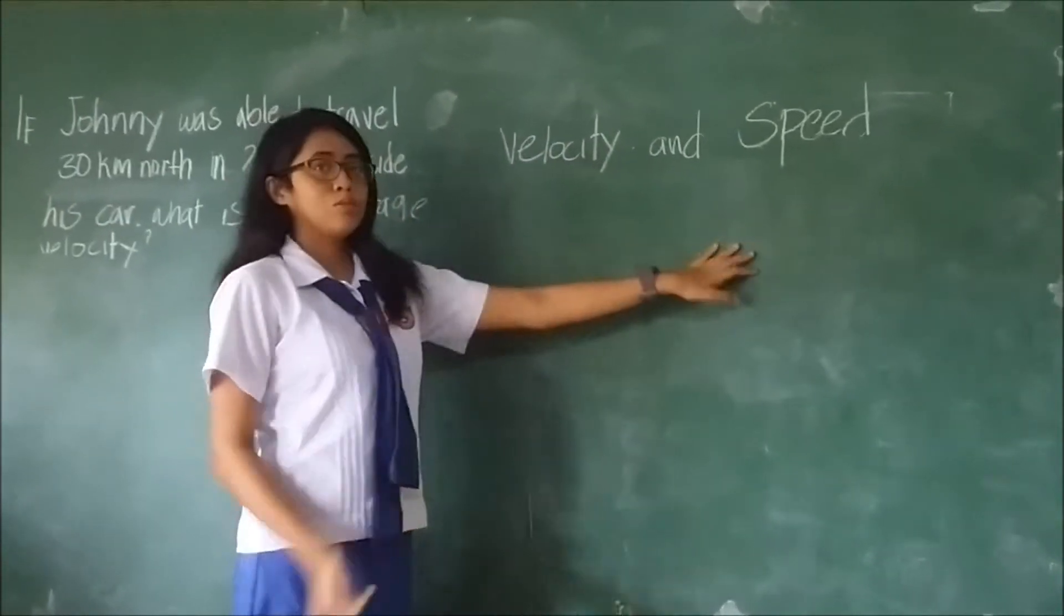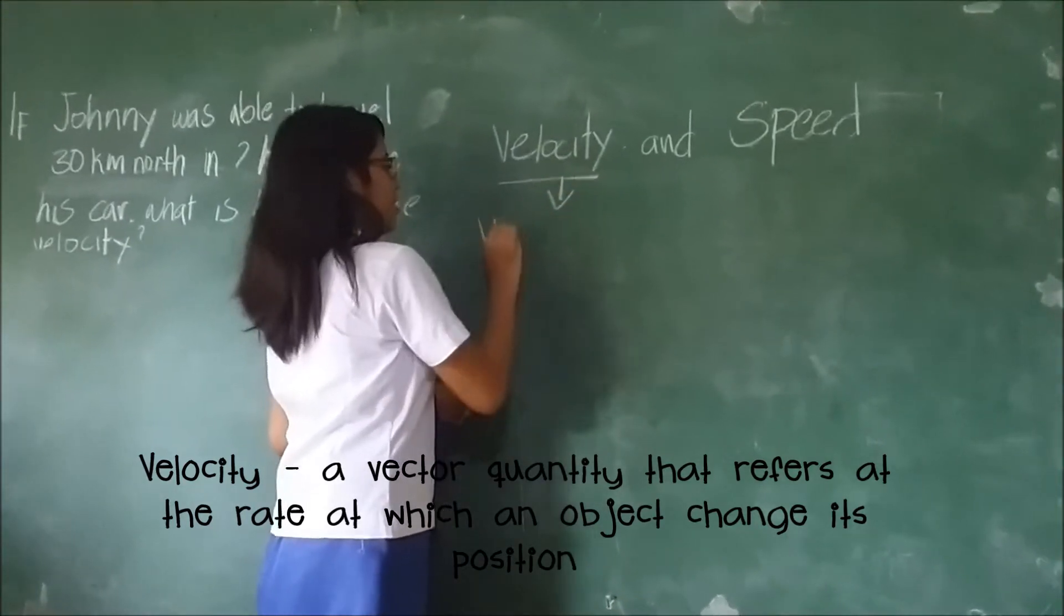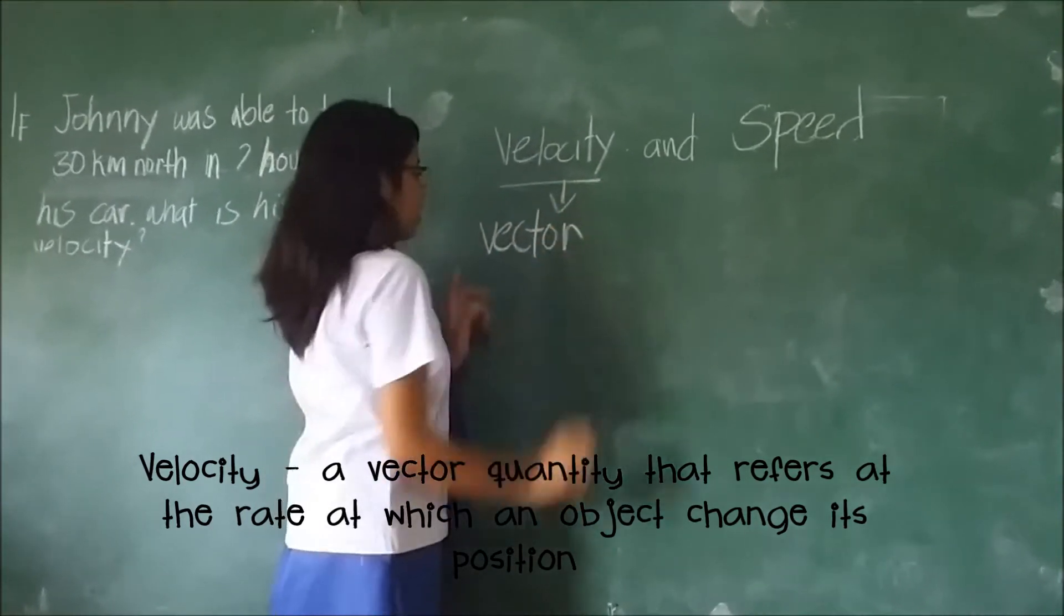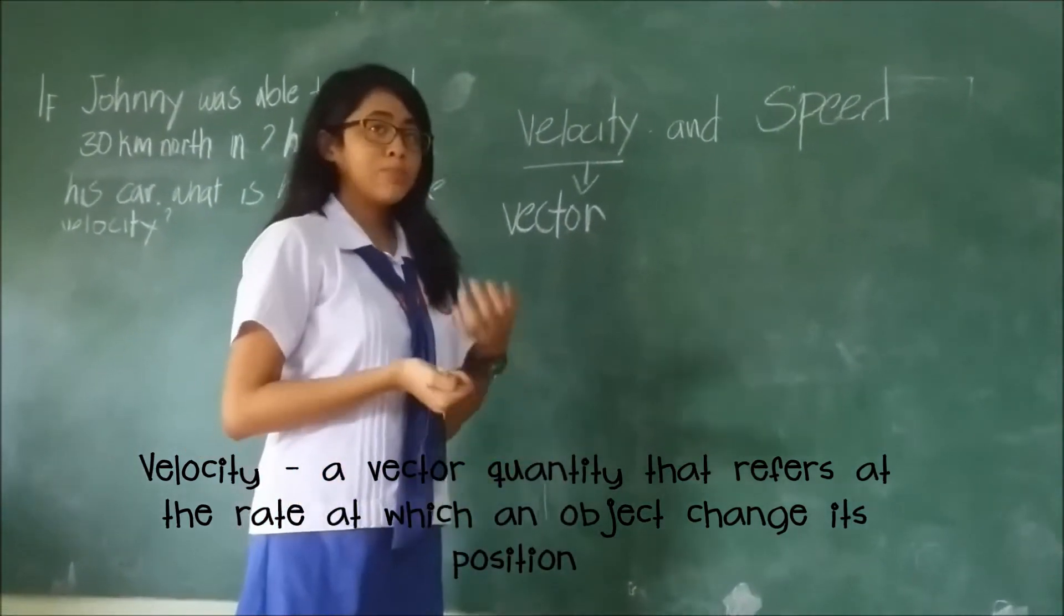First, let's define these two different terms. Velocity is defined as a vector quantity that refers to the rate at which an object changes its position.